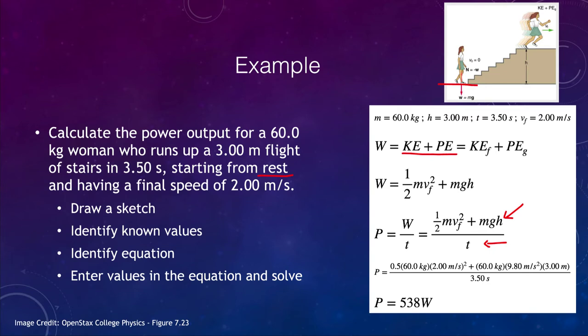So that is the amount of power that it takes to climb those stairs and end up at a velocity of two meters per second. Now, if the time were smaller, then that amount of power would be larger. So it takes more power to go up faster. If you walked up those steps very slowly, it would require much less effort, so it would require less power.